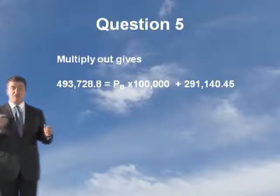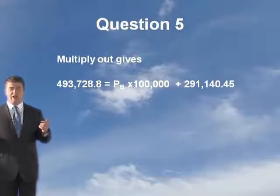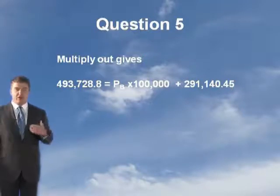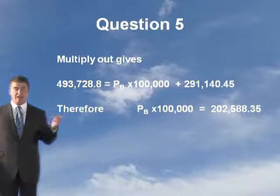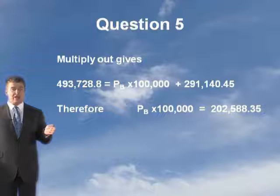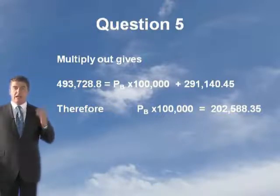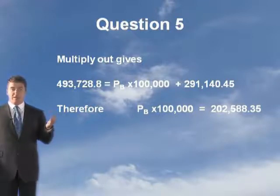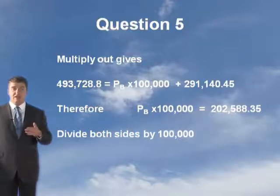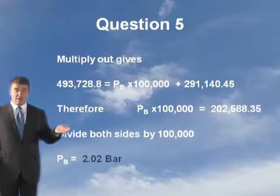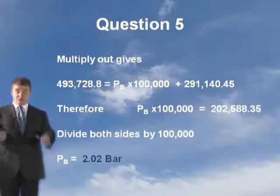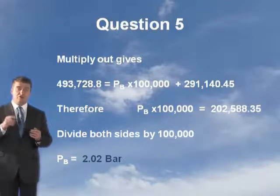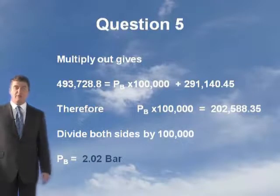To isolate PB, subtract 291,140.45 from both sides: PB times 100,000 equals 202,588.35. Dividing both sides by 100,000, the pressure at the nozzle is 2.02 bar. That is what it would be — that's how you work this particular problem out.